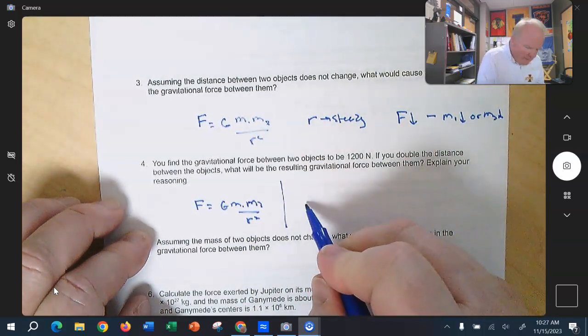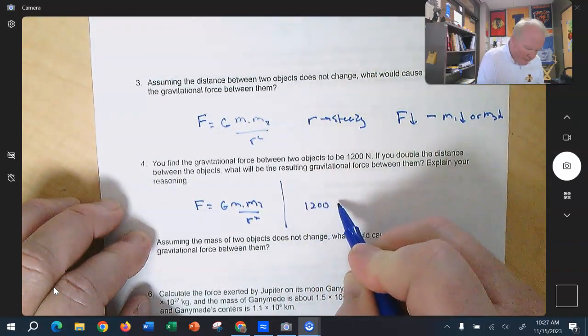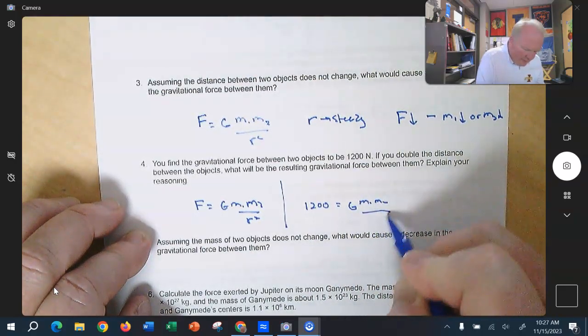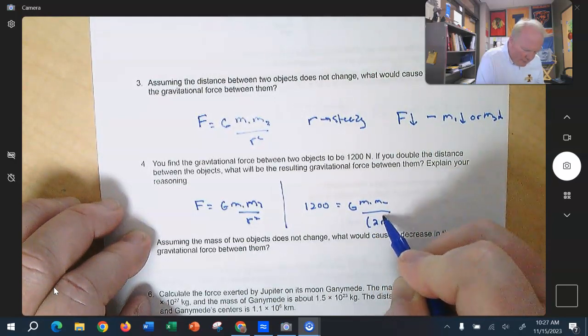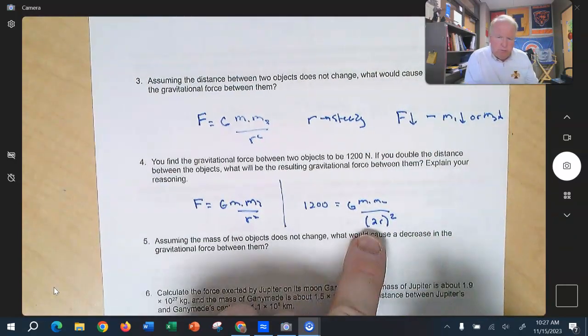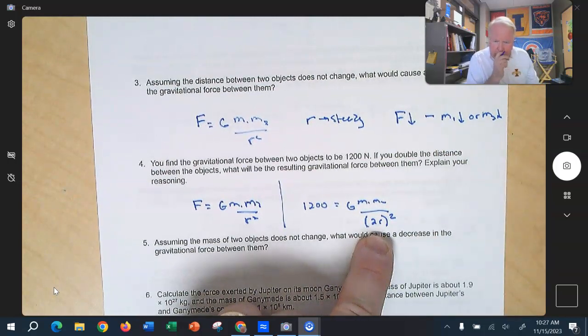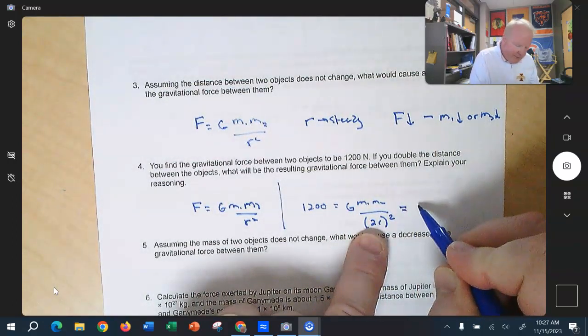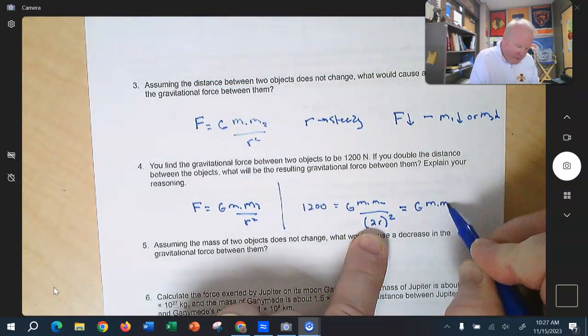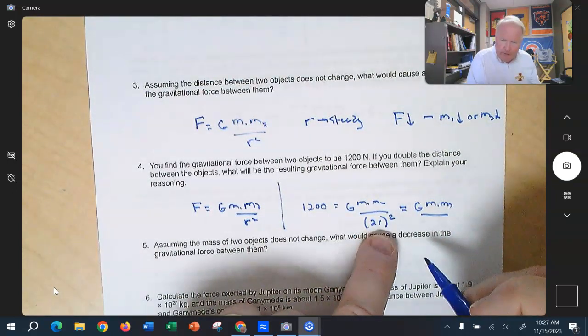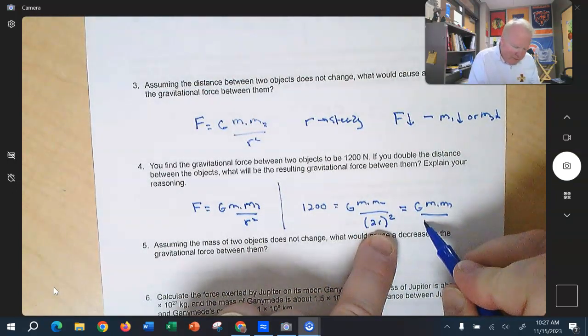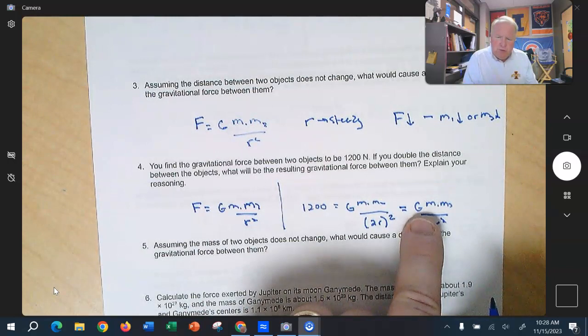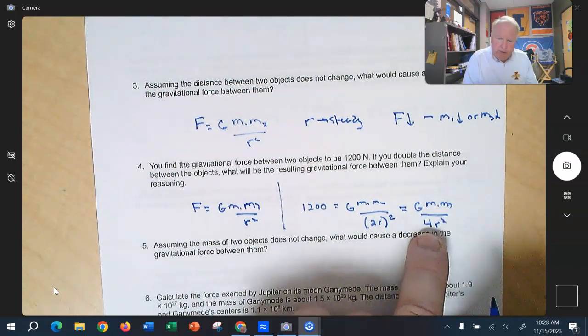So now the new equation, they say, well, the force is equal to 1,200. G stays the same, m1 and m2 stay the same, but we're going to double r. You see, I put 2r. That's a little confusing to me, so I'm going to use a little bit of math to say, well, that must be G m1 m2 divided by, what's 2r squared? Well, 2 squared is 4, r squared is r squared, and so I get this. G is equal to m1 m2 divided by 4r squared.